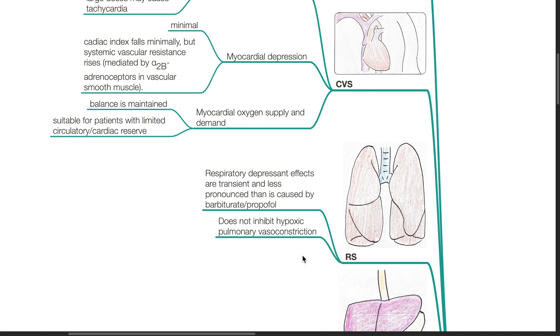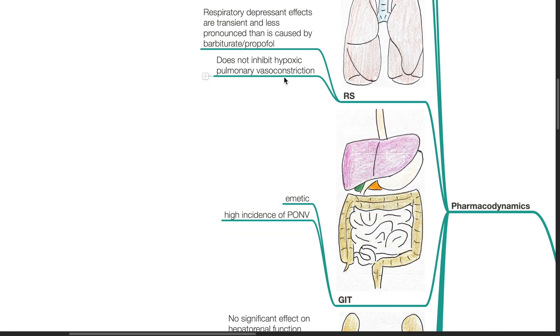Respiratory System: The respiratory depressant effects are transient and less pronounced than caused by barbiturate or propofol and etomidate does not inhibit hypoxic pulmonary vasoconstriction. Etomidate causes emetic effects and this results in high incidence of post-op nausea and vomiting.